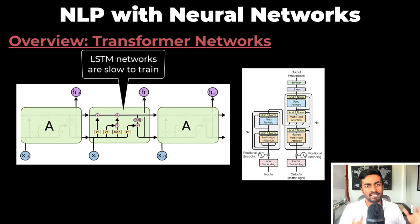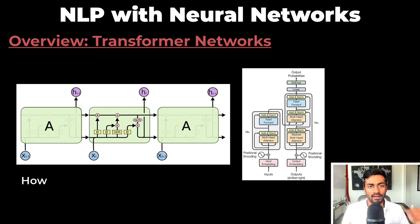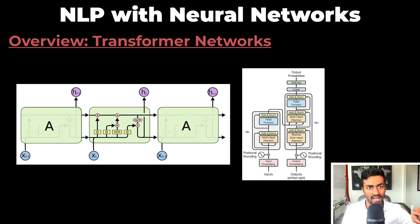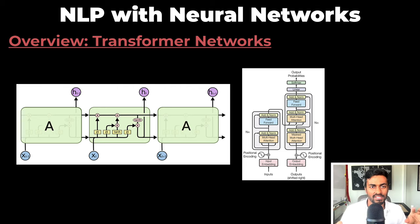Now the problem with LSTM networks is that they are slow to train. And to deal with this, transformer neural networks were introduced. LSTM networks process inputs sequentially — one word at a time — but transformers can take words in parallel. So let's look at this architecture to see how this is possible.